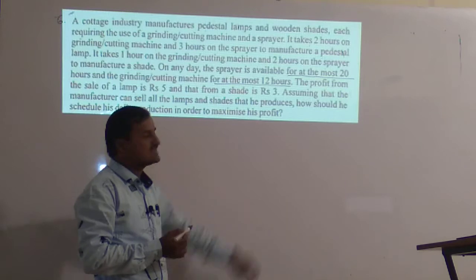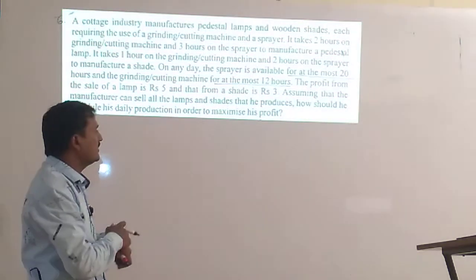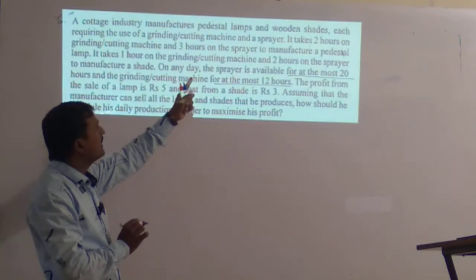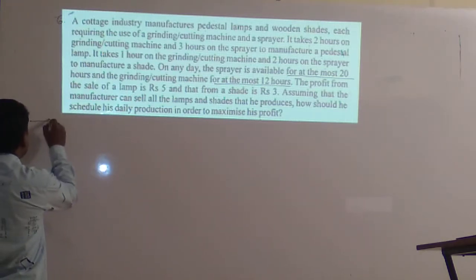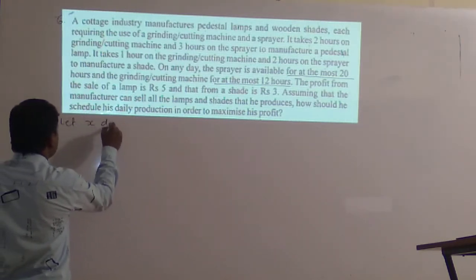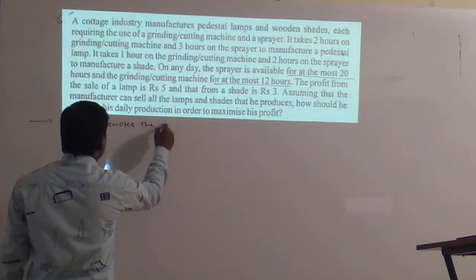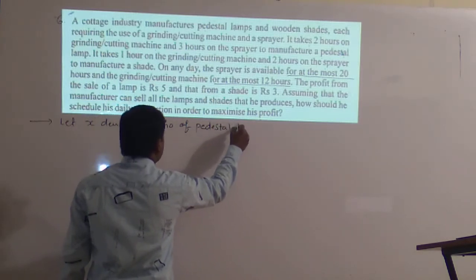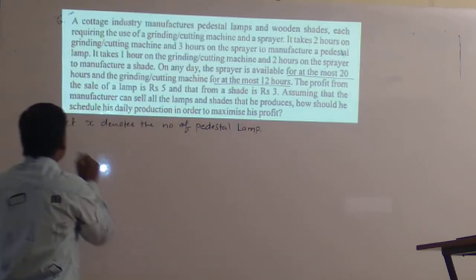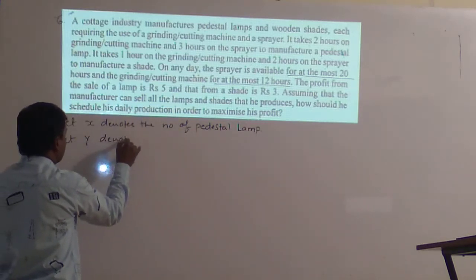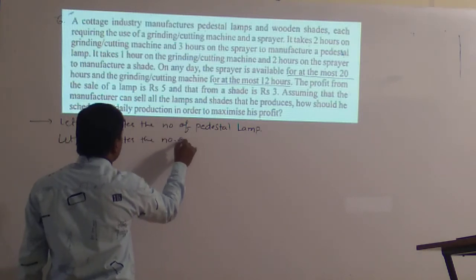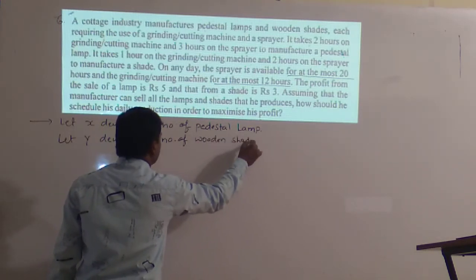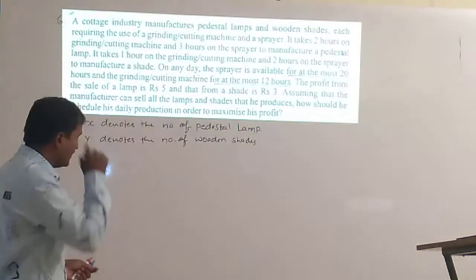The profit from the sale of a lamp is 5 rupees and that from the shade is 3 rupees. Assuming that the manufacturer can sell all the lamps and shades that he produced, how should he schedule his daily production in order to maximize the profit? There are two products: pedestal lamp and wooden shades. Let x denote the number of pedestal lamps and let y denote the number of wooden shades.